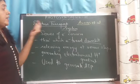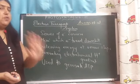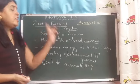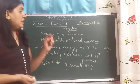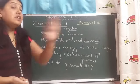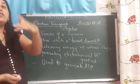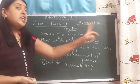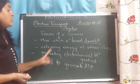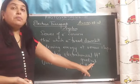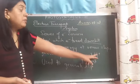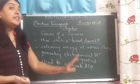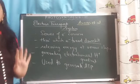The electron transport system concept is the same in both photosynthesis and respiration. It is a series of electron carriers through which electrons travel from higher energy level to lower energy level. They release energy at various steps, generating an electrochemical proton gradient, and this is used to generate ATP.